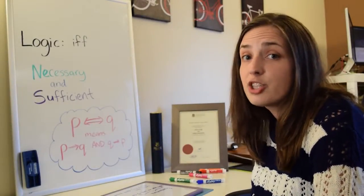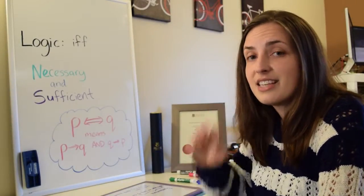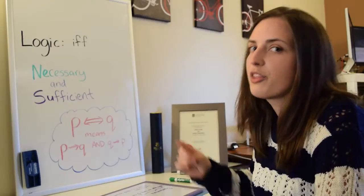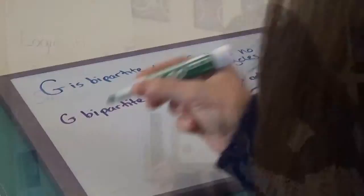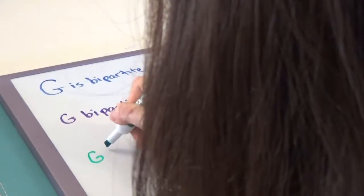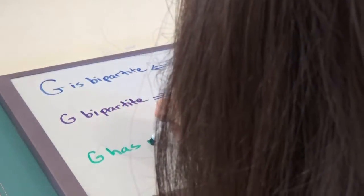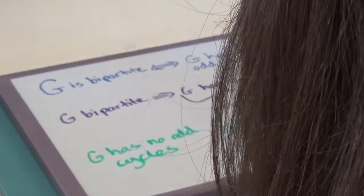Now, what about sufficient? Sufficient conditions mean that the condition is enough to tell you that the graph is bipartite. So it's this statement: if G has no odd cycles, then G is bipartite.